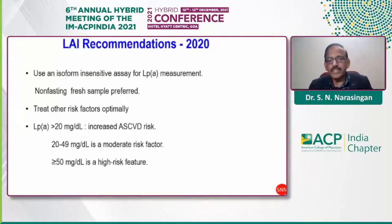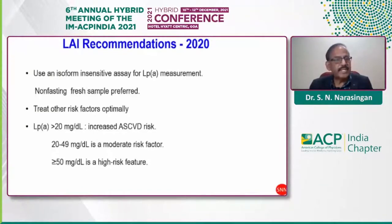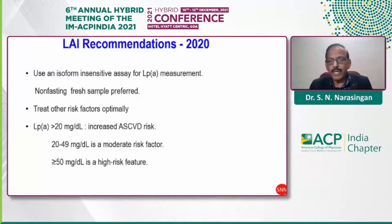The Lipid Association of India 2020 recommendations state: use an isoform-insensitive assay for Lp(a) measurement; non-fasting plasma samples are preferred; treat other risk factors optimally. Levels above 20 mg indicate increased ASCVD risk; 20–49 mg is a moderate risk factor; over 50 mg is a high-risk feature.